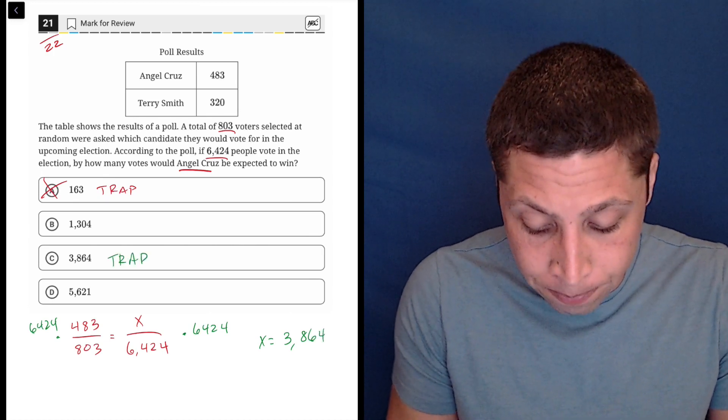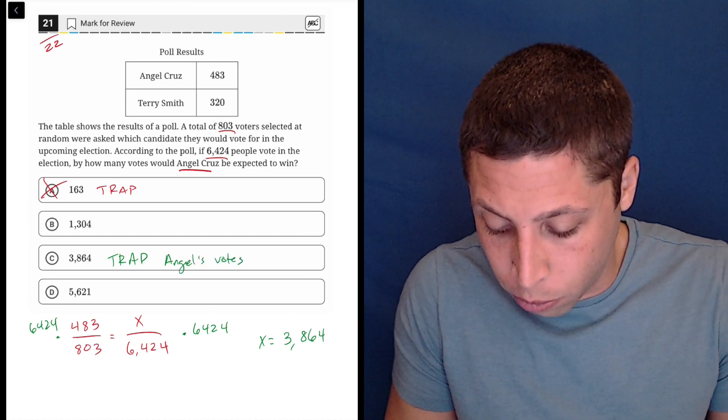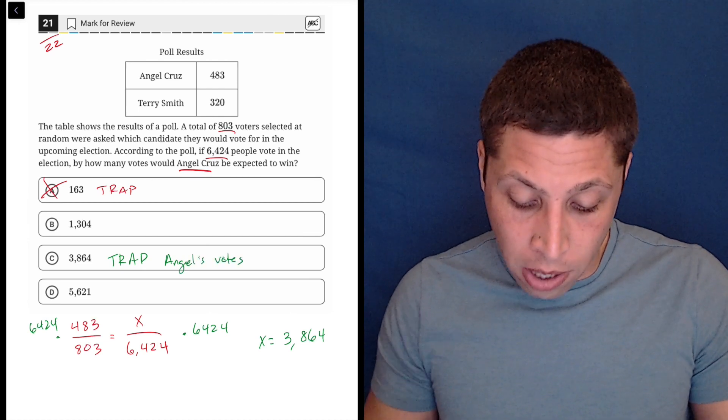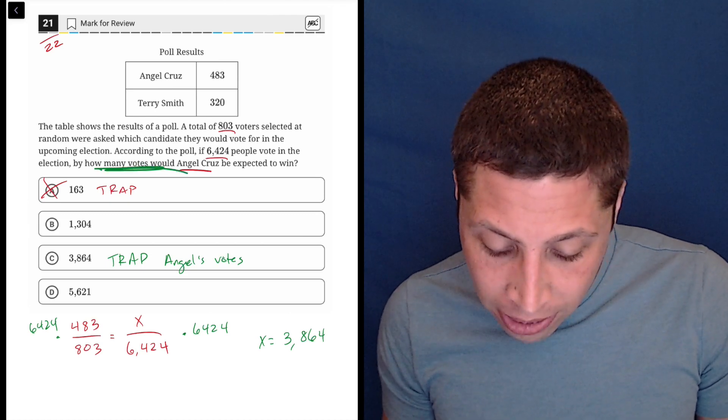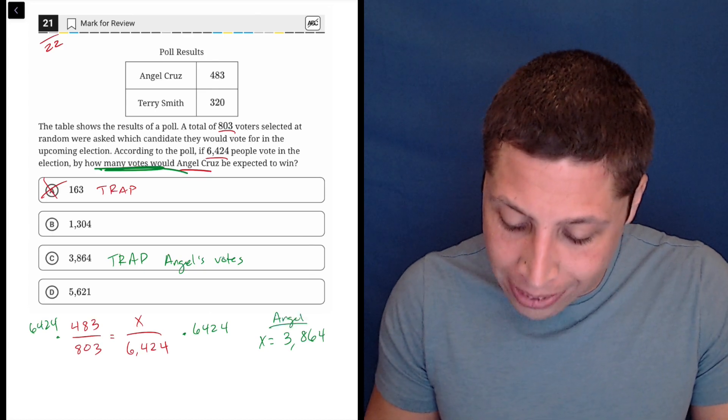And we can see where trap answer number two comes in, right? That's Angel's votes. But we don't want Angel's votes. According to the poll, by how many votes would Angel Cruz be expected to win? So we need to know how many votes he wins by.